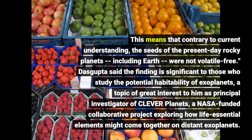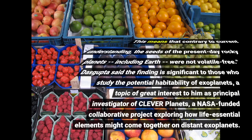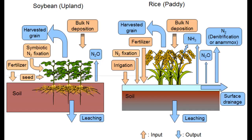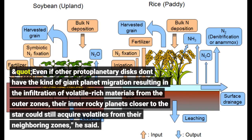Dasgupta said the finding is significant to those who study the potential habitability of exoplanets. At least for our own planet, we now know the entire nitrogen budget does not come only from outer solar system materials, said Dasgupta, Rice's Maurice Ewing Professor of Earth, Environmental and Planetary Sciences. Even if other protoplanetary disks don't have the kind of giant planet migration resulting in the infiltration of volatile-rich materials from the outer zones, their inner rocky planets closer to the star could still acquire volatiles from their neighboring zones.